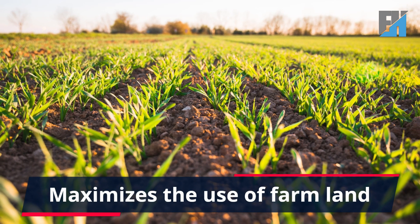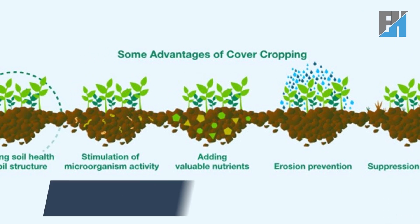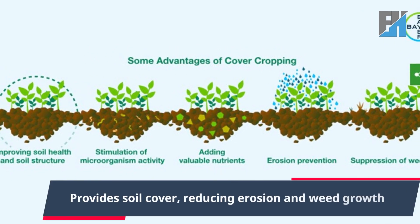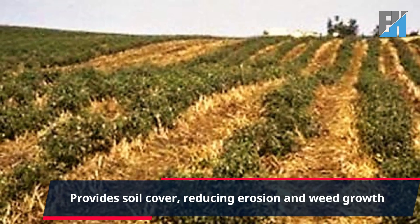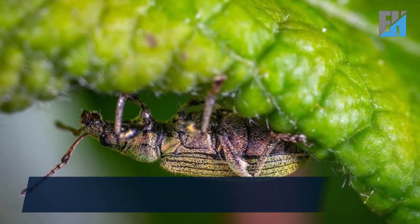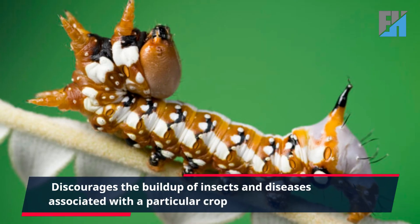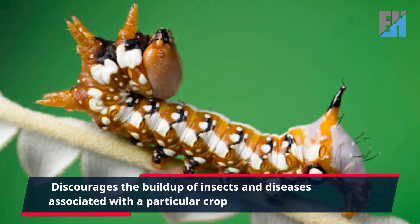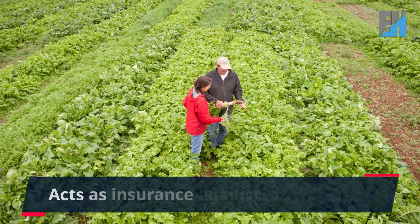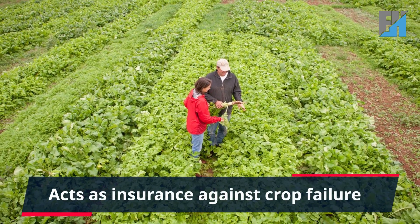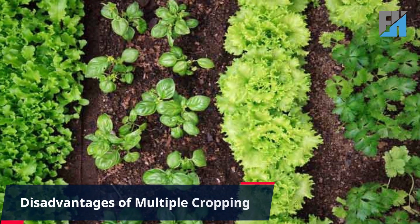Advantages of multiple cropping: one, it maximizes the use of farmland. Two, it provides soil cover, reducing erosion and weed growth. Three, it discourages the buildup of insects and diseases associated with a particular crop. Four, it acts as insurance against crop failure.